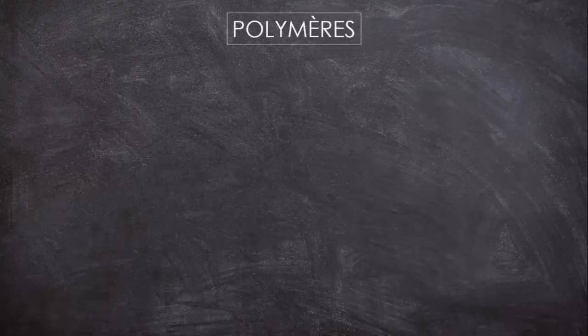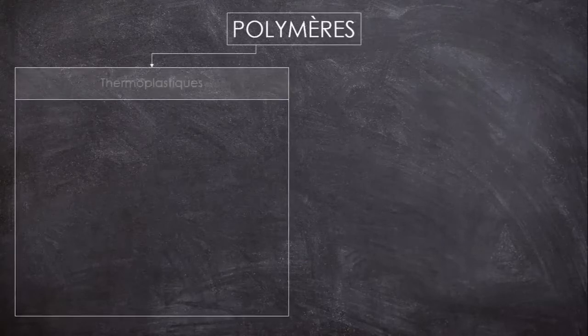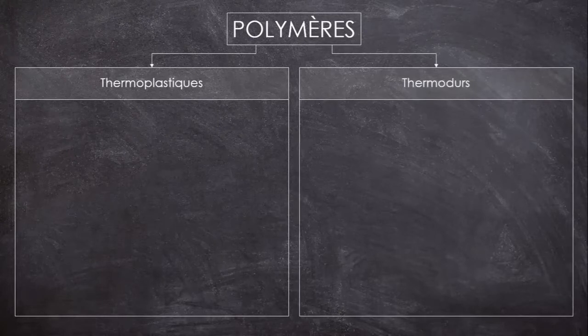Maintenant qu'on a grossièrement vu ce qu'était un polymère et quel phénomène permet leur fabrication, voyons comment ces macromolécules s'organisent dans les matériaux polymères, parce qu'en fait c'est avec ça qu'on va les classer. Quels qu'ils soient, les polymères se regroupent en deux grandes familles. On va avoir d'un côté ce que l'on appelle les thermoplastiques, et de l'autre les thermodurs, ou les thermodurcis, qu'on confond souvent avec les thermodurcissables, mais il y a une petite subtilité.